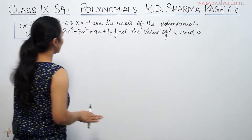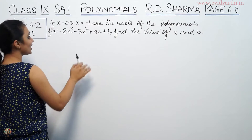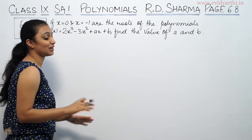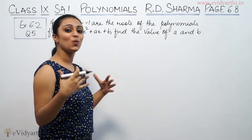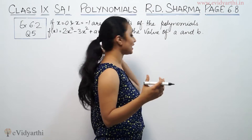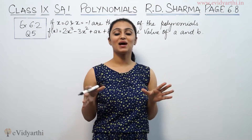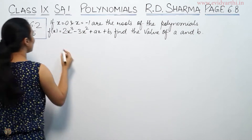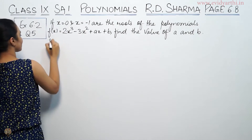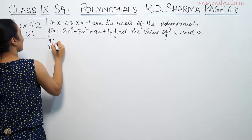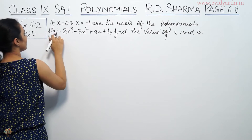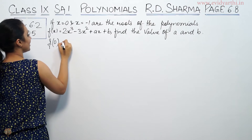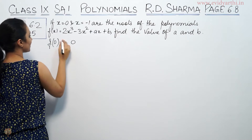So we're writing the question. When you say that this is the root, that means if you put that value in, the answer should be equal to 0. So if we put in 0, this should be equal to 0.